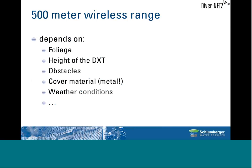Weather conditions might also affect the range—for example, heavy snow or rain will reduce it. The cover material will also affect the range, and most problematic is metal, which acts as a Faraday cage and could totally block the wireless signal.